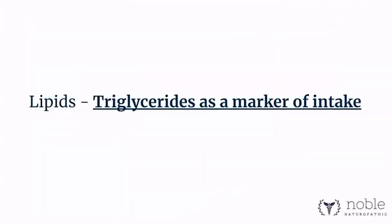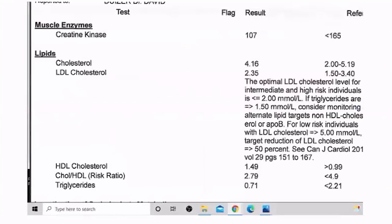Now the next thing we want to look at is triglycerides and the lipid panel — cholesterol in general. You'll see a lot come across your desk, so it's really important to be familiar with what this panel looks like. Here's mine. See where it says Lipids: there's total cholesterol with the value and reference range, then LDL cholesterol — that's the amount of cholesterol inside the LDL protein being carried by that protein.